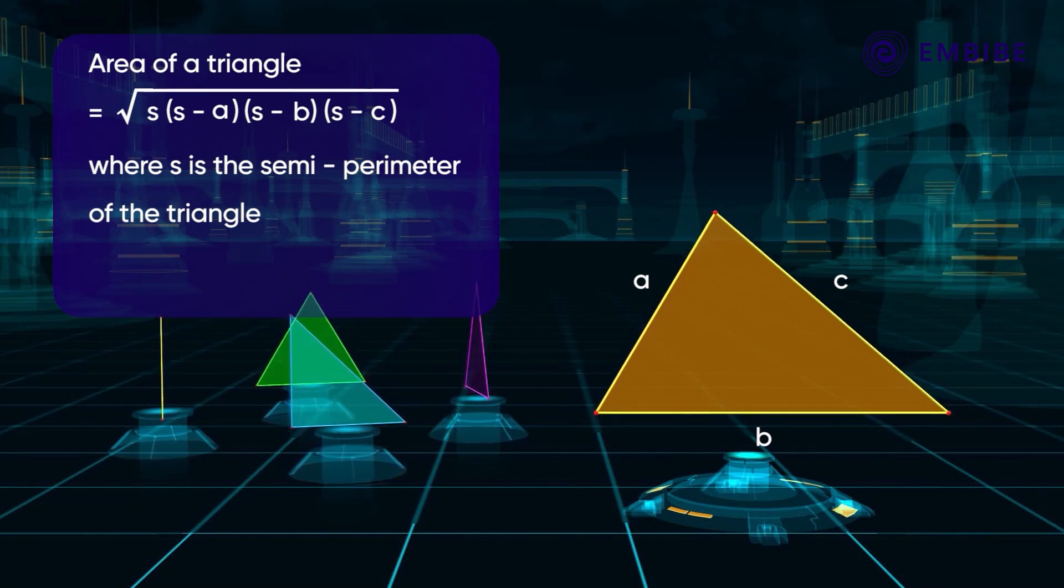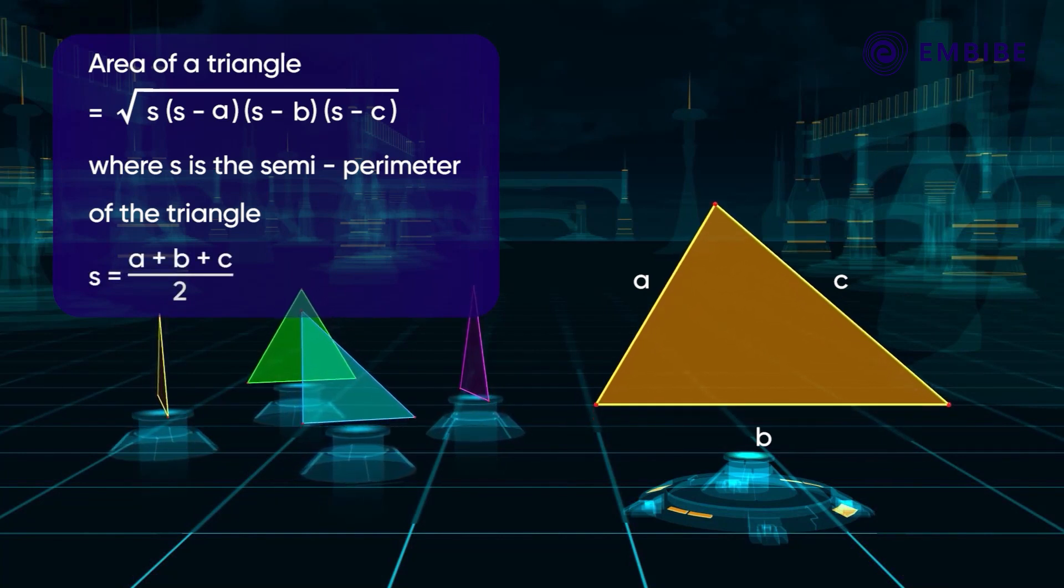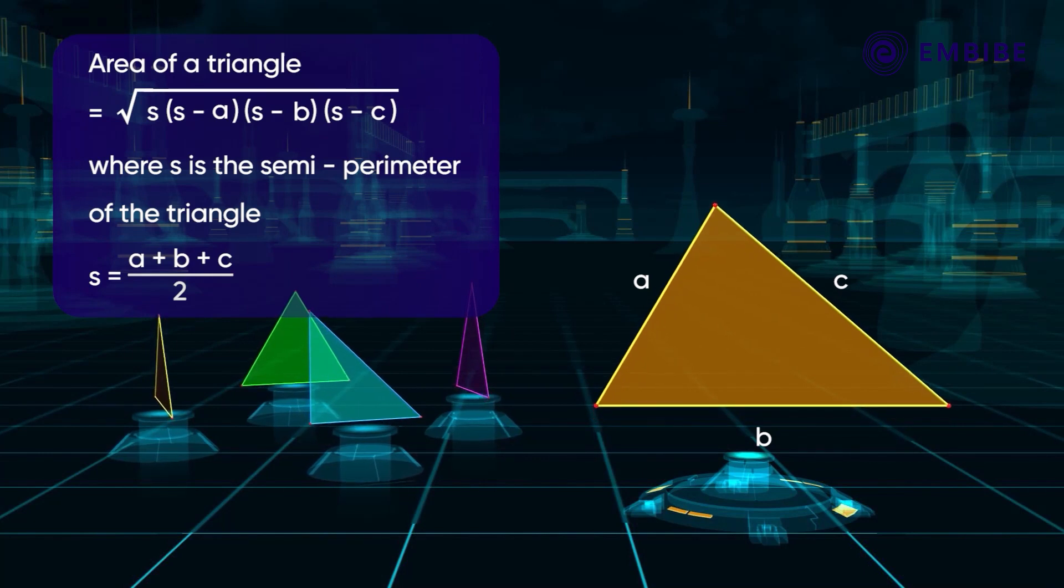Where S is the semi-perimeter of the triangle. That is, S is equal to A plus B plus C whole divided by 2.